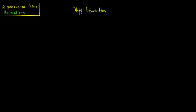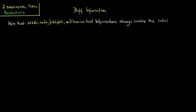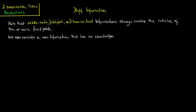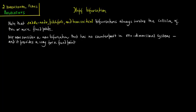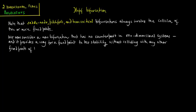We now deal with the Hopf bifurcation. Note that the saddle node, the pitchfork, and the transcritical bifurcations always involve the collision of two or more fixed points. We now consider a new bifurcation that has no counterpart in one-dimensional systems, and it provides a way for a fixed point to lose stability without colliding with any other fixed points of the system.